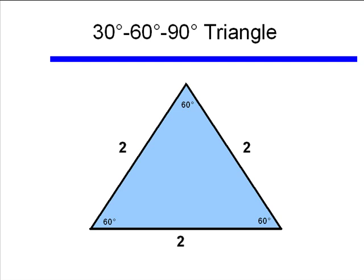Well I'm going to bisect one of the 60 degree angles into two equal halves of 30 degrees each. This gives us two identical triangles, both with angles 30, 60, and 90 degrees. Let's just look at one of those.